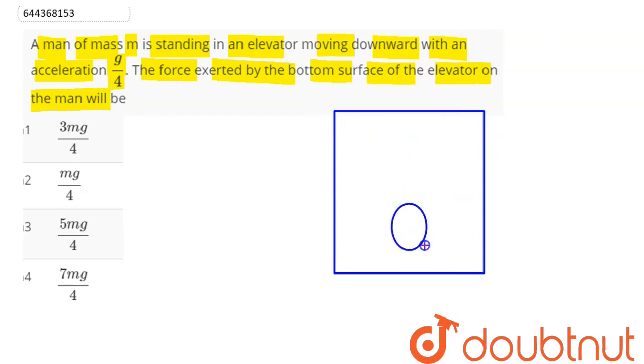And on this elevator, there is suppose this is the man whose mass is given in the question as let's say m. So here it says acceleration is equal to g by 4. So we can say here mg will act downward. This is the weight of the man.